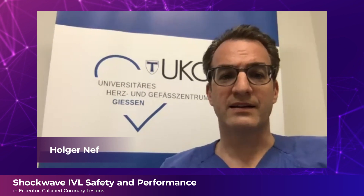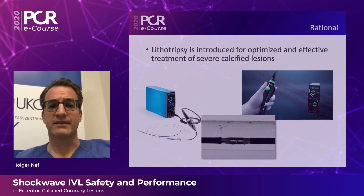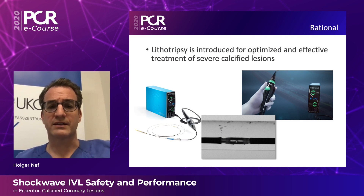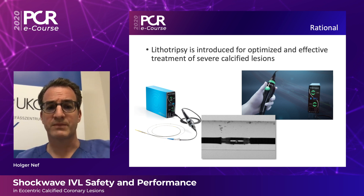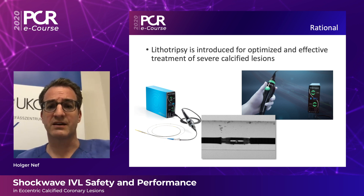This is an analysis from the DISRUPT CAT1 and CAT2 study, comparing patients having eccentric and concentric lesions. We treat these lesions with coronary intravascular lithotripsy. This is the first analysis of any calcium modification technology comparing the effect of intravascular lithotripsy on eccentric versus concentric lesions.